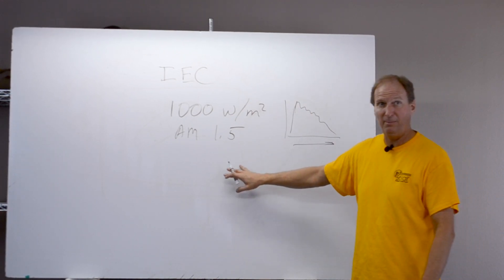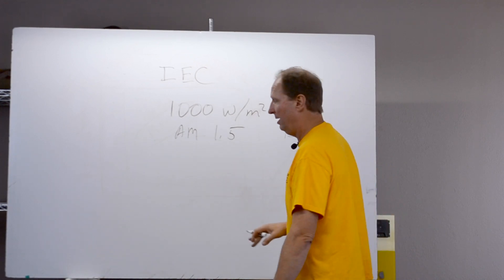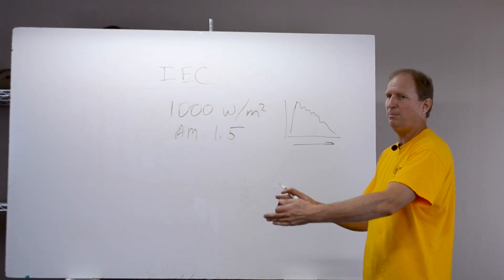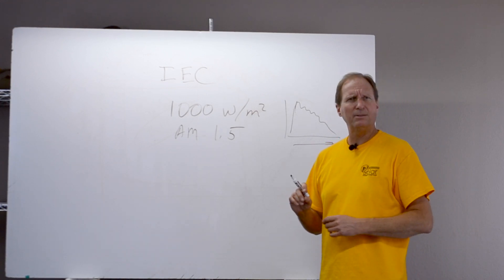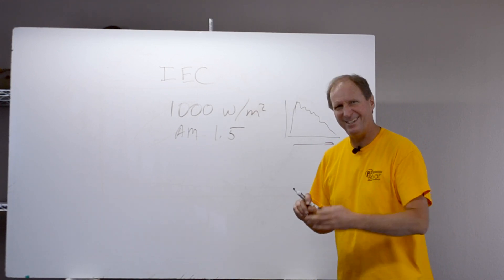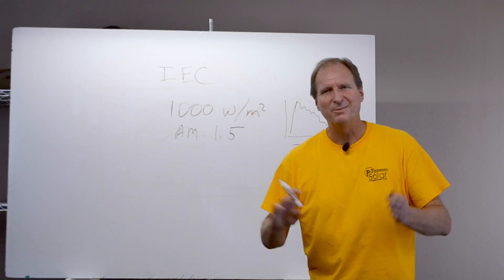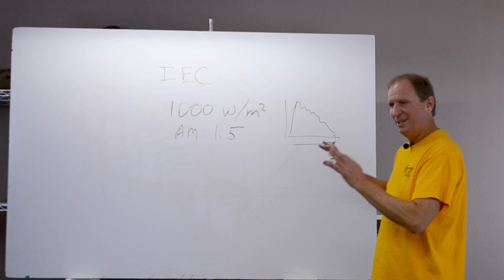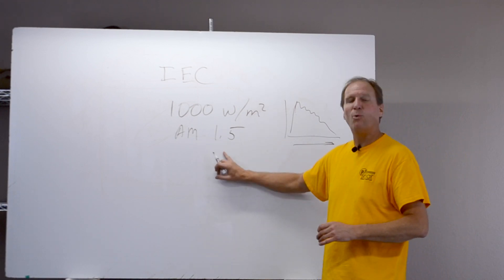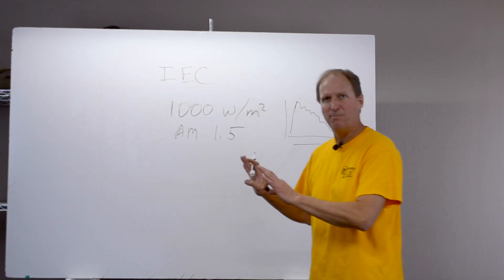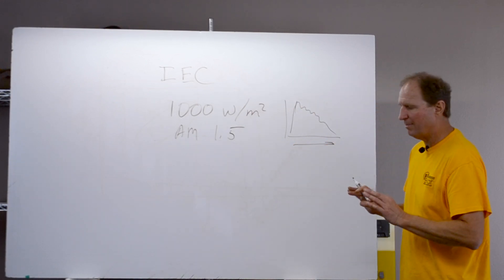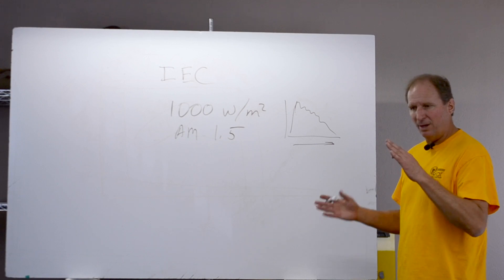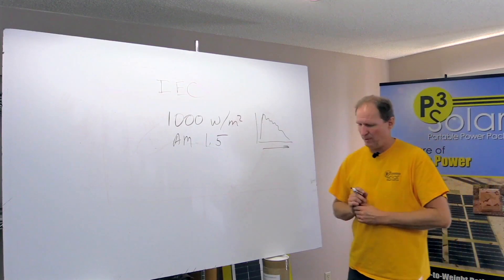Here in Tucson, we're not at one and a half air mass typically in the summertime, we're around 1.2-ish, because you'd have to be right at the tropic of Cancer. Is Cancer the upper one? No, I got to think about this. I'll just say, you'd have to be right at one of the tropic lines to be able to get to an air mass of 1.0 at noon. So you always have more than air mass of one as long as you're outside the range of the tropic lines.